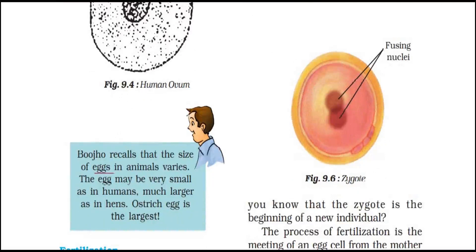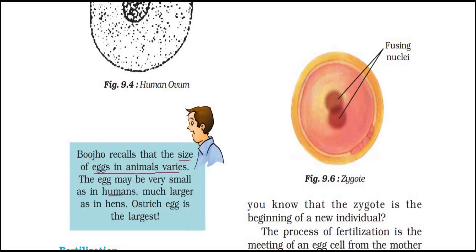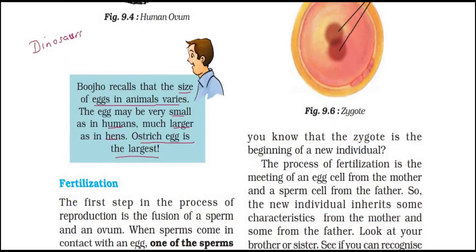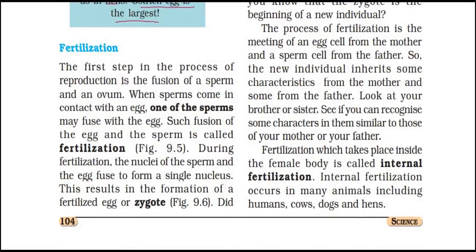The size of eggs in animals will vary. The human egg is very small. Hens' eggs are larger — those are the eggs we eat. The ostrich egg is the largest egg known today. Dinosaurs are extinct, but their eggs must have been huge — possibly as large as footballs.